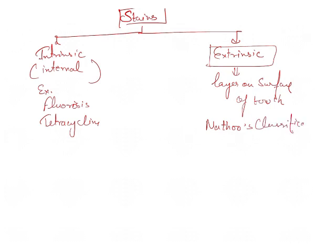According to the Nathos classification, stains are categorized into N1, N2, and N3. In N1, the colored material binds to the tooth surface and the color of the chromogen — that is the colored material which is bound — is similar to that of the dental stain. So the chromogen binding on the surface of the tooth is the same color as the stain.